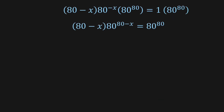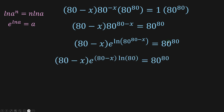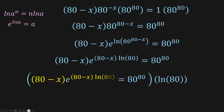Now we're going to apply this exponent property and this logarithm property. This means we're going to rewrite the expression as e to the ln of that function. I'm going to leave the other side the way it is because there's not much that can be done there.